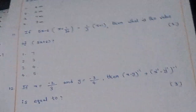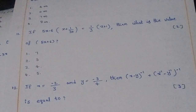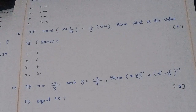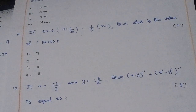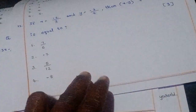Eleventh question: If (5x − 6)(5x − 6)(x + 1) divided by 30 equals 1/3 times (x + 1), then what is the value of 5x + 6? The right answer is option 2: 3.